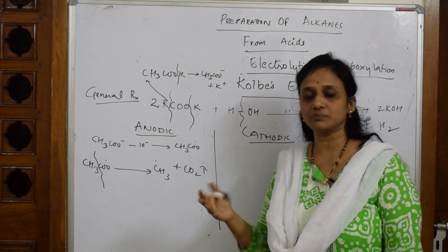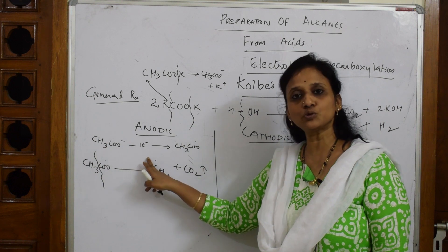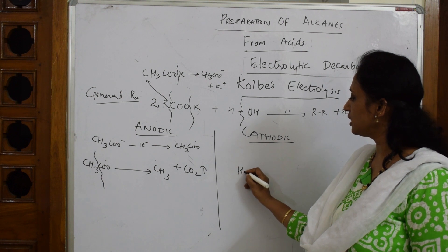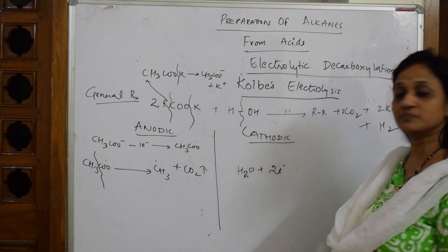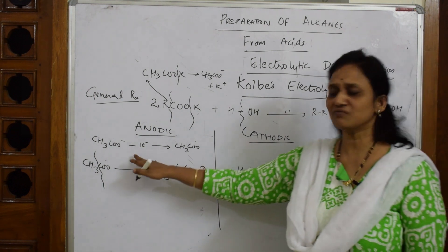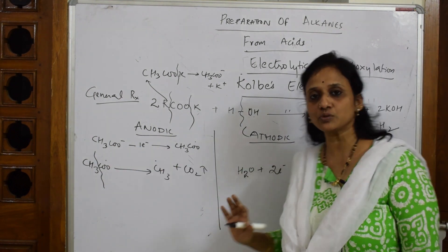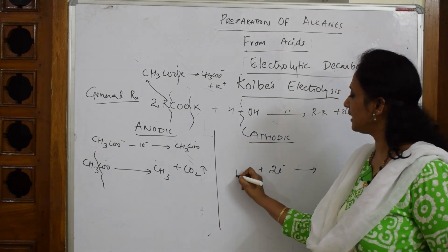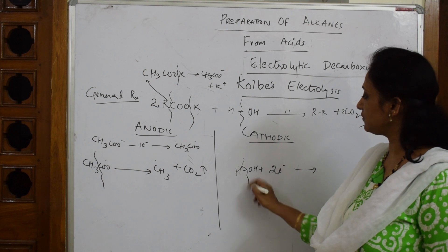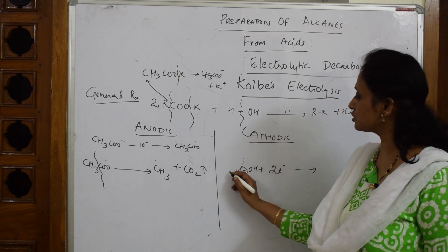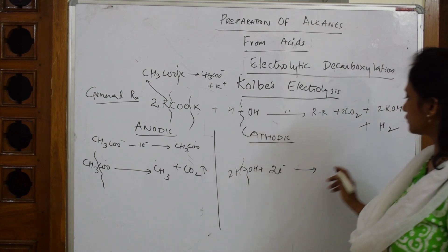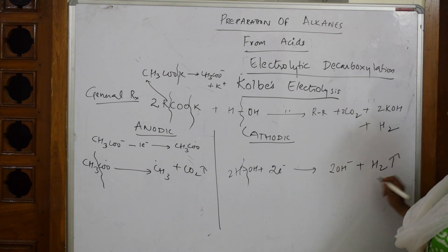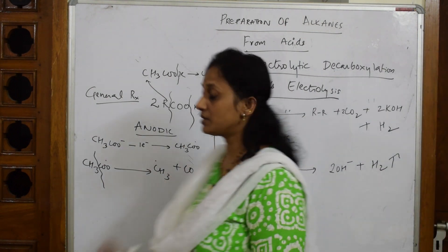The electrons from the anodic compartment — two electrons for two moles — are transferred to the cathodic compartment and picked up by water molecules. Two H₂O molecules take these two electrons, giving two OH⁻ plus hydrogen gas H₂. So hydrogen gas is evolved at the cathode and carbon dioxide at the anode.